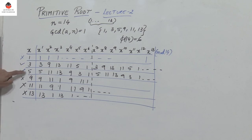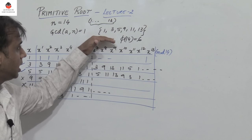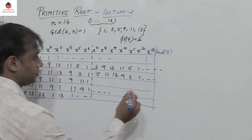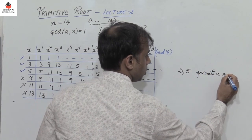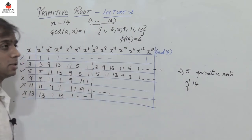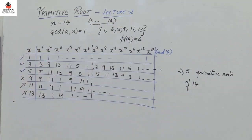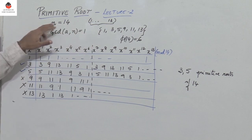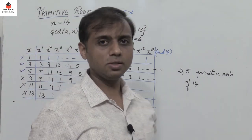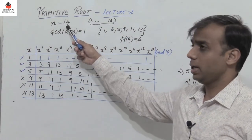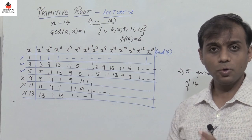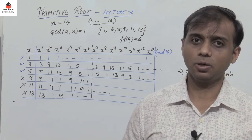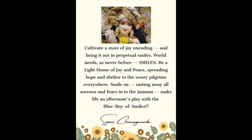So we observe that the two numbers 3 and 5 generate all the numbers which are relatively prime to 14. Hence 3 and 5 are the primitive roots of 14, whereas the 6 numbers 1, 3, 5, 9, 11, 13 are numbers which are relatively prime to n which is 14. In the previous video segment, instead of considering a given number n I had considered a prime number p — the link has been given in the description. Do not forget to like, share, and subscribe, and press the bell icon to get notifications of all further uploads. Thanks for watching.